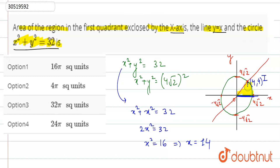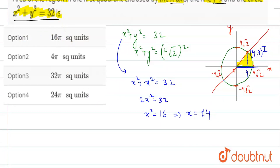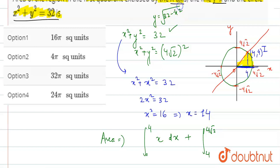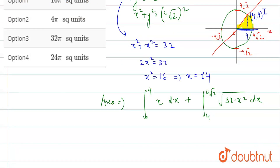Drawing a construction line at x = 4, we split the area into two parts. From 0 to 4, the area is under the line y = x, giving ∫₀⁴ x dx. From 4 to 4√2, the area is under the circle, giving ∫₄^{4√2} √(32 − x²) dx.